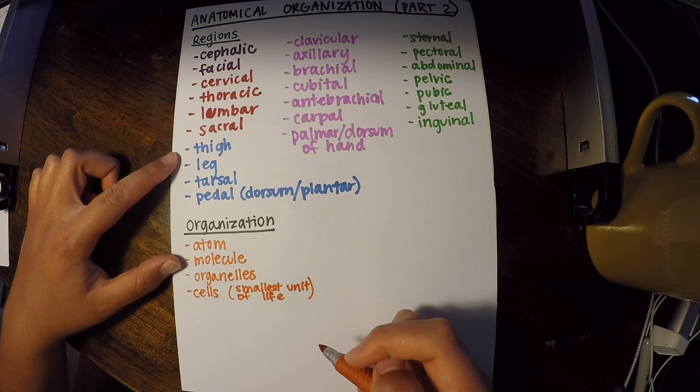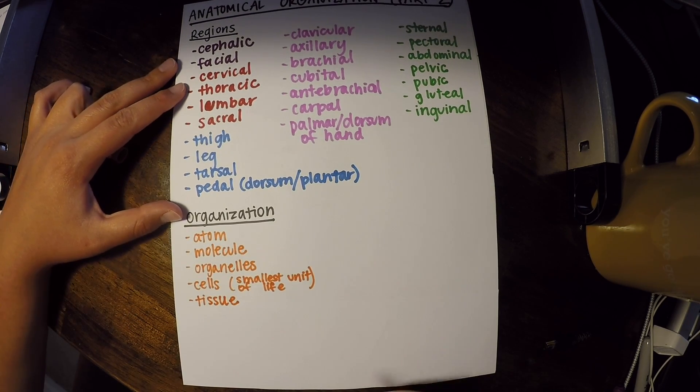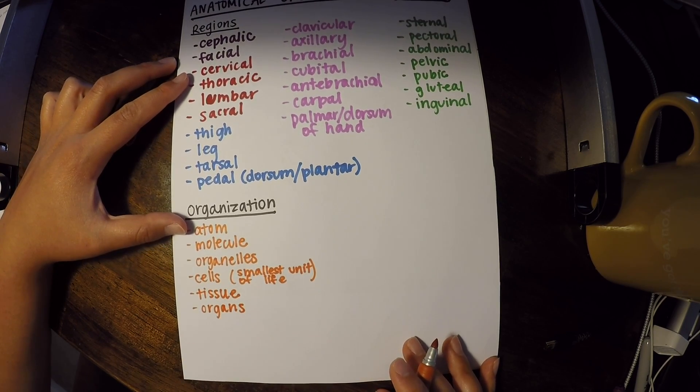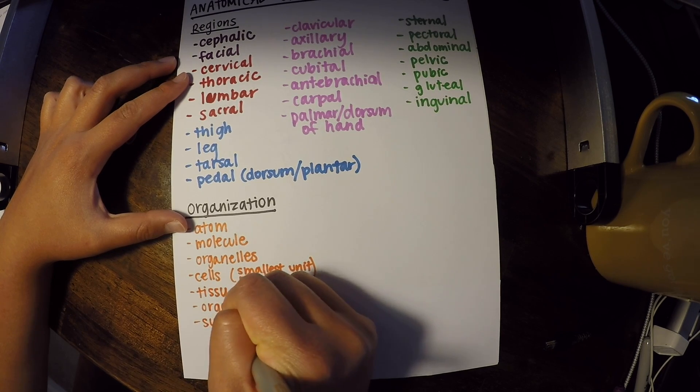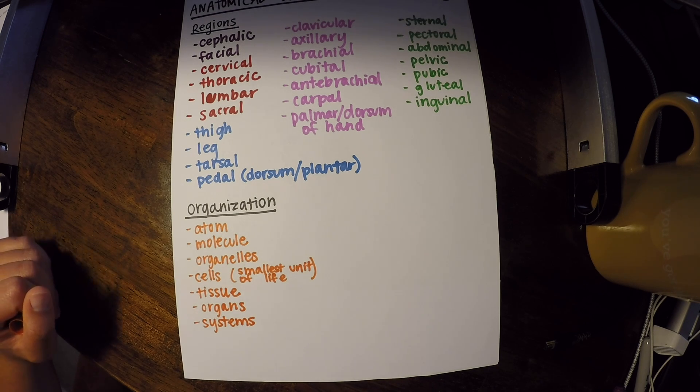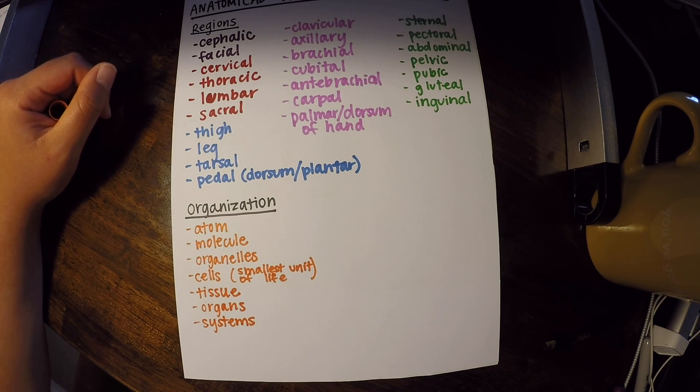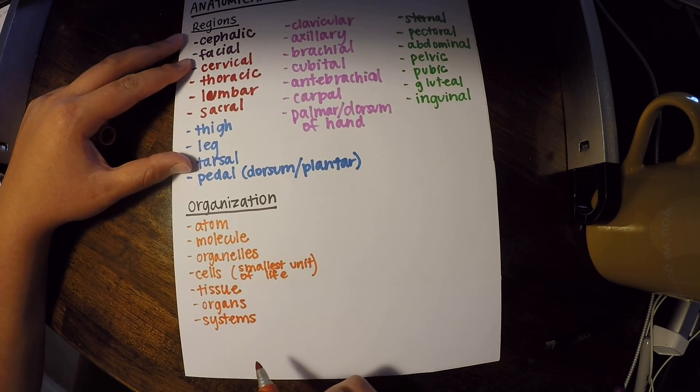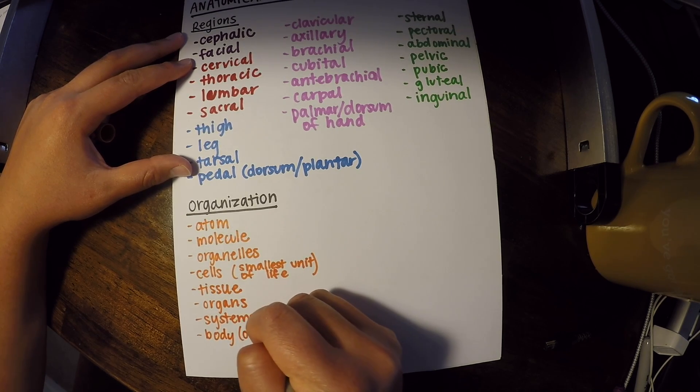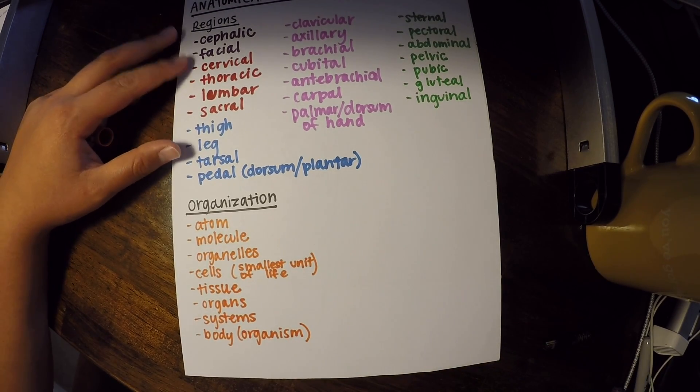Different cells will come together to form tissues. Those tissues will come together to form organs. Those organs will come together to form systems, and examples of those are like your digestive system, your circulatory system having to do with your heart and your blood and everything. And then all of your different systems form your body, or the organism as a whole. So just keep this organization in mind as we go through our anatomy.